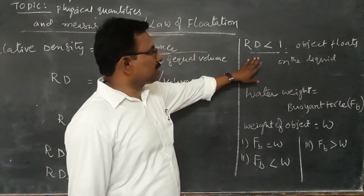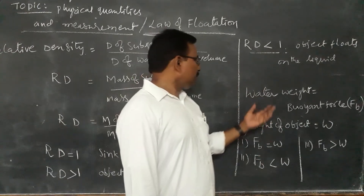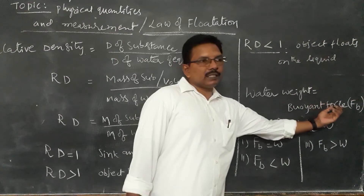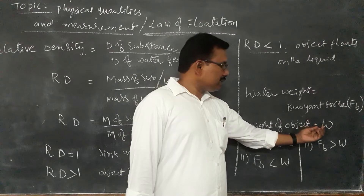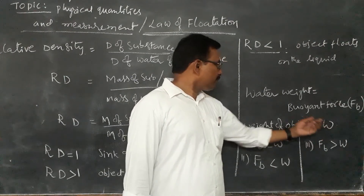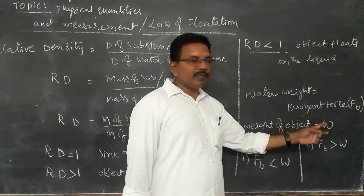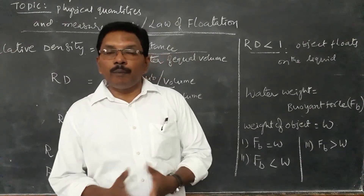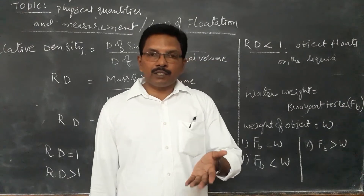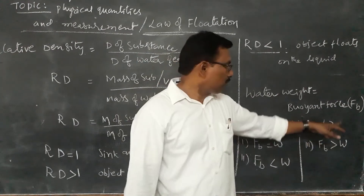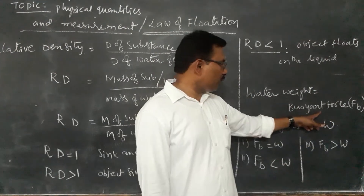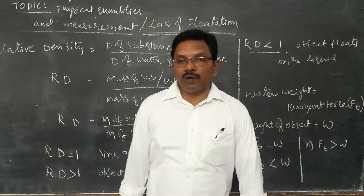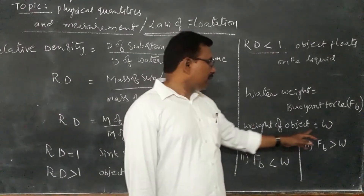We can also express these relations using buoyant force. The water weight acting upward is called the buoyant force, represented as FB. The weight of the object acting downward due to gravity is represented as W. So FB is the upward force exerted by the water against gravity, and W is the weight of the object towards gravity.